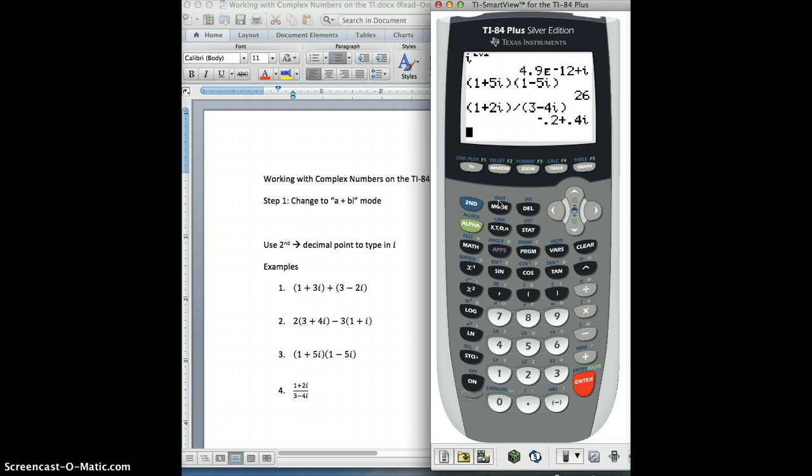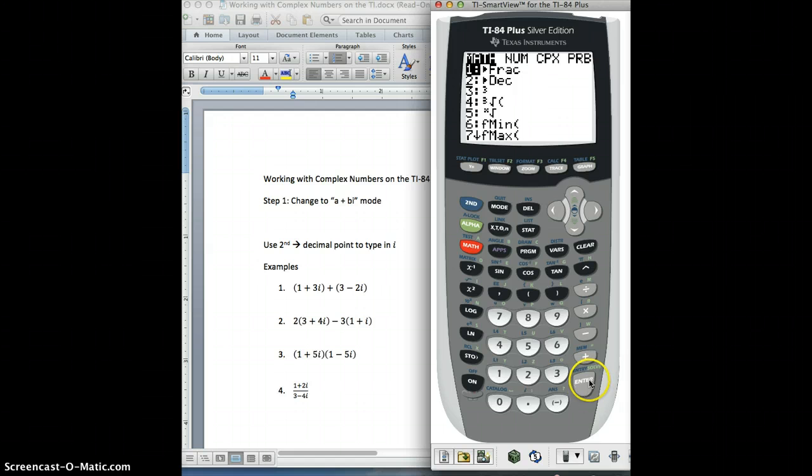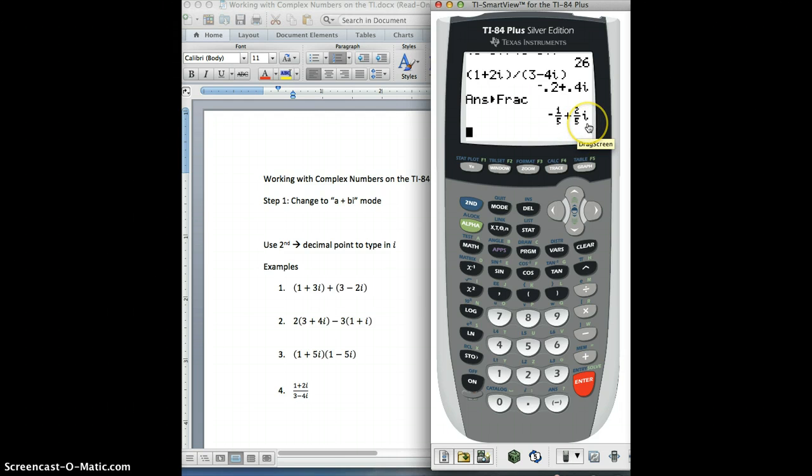It gave it to me in decimal form. Actually, I'm glad this happened. It's in decimal form. So all I have to do then is go to math and I choose option number 1 which is turn my answer into a fraction. I do it again. It's negative 1 fifth plus 2 fifths i.